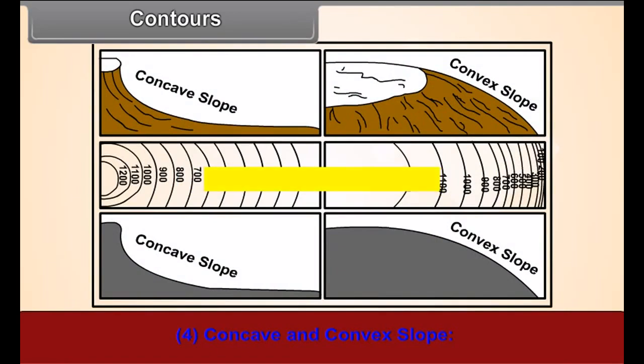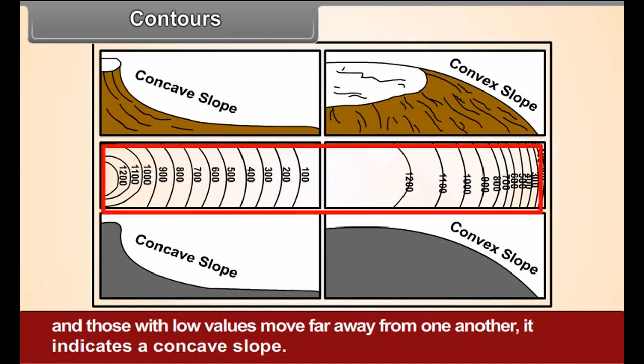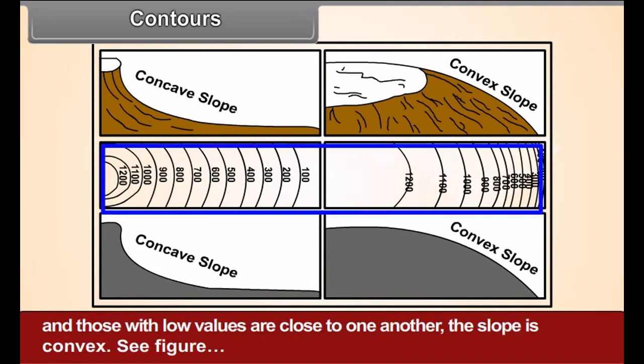Number 4. Concave and convex slope. On a map, if the contour lines with higher values are close to one another and those with low values move far away from one another, it indicates a concave slope. As against this, if the contour lines with higher values are farther away and those with low values are close to one another, the slope is convex.